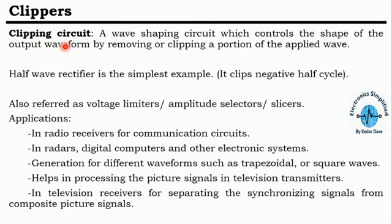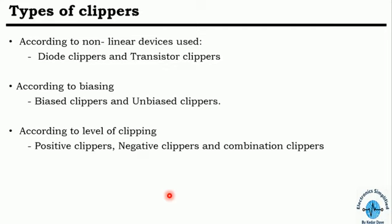The classification of clippers can be done in three ways: first, according to the non-linear device used — diode clippers and transistor clippers; second, by biasing — bias clippers and unbiased clippers; and third, by level of clipping — positive clipping, negative clipping, and combinations of both.